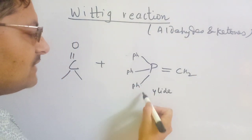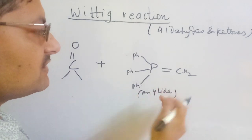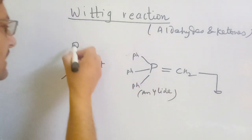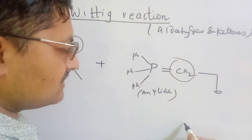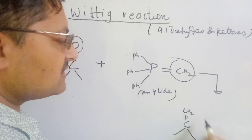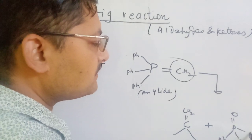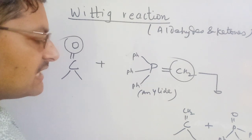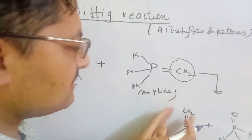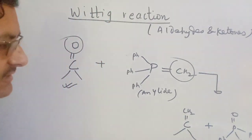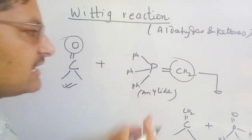The ylide is a carbon compound with a phosphorus-carbon double bond. The CH2 group is displaced. This reaction is defined as the reaction where carbonyl compounds are directly converted to alkene by using a phosphorus ylide compound like this.